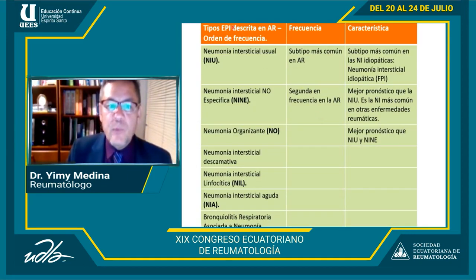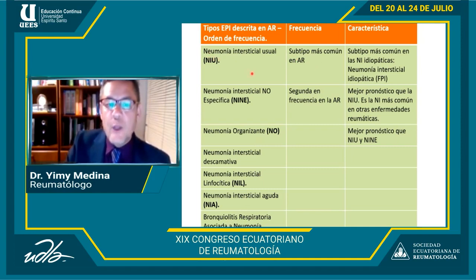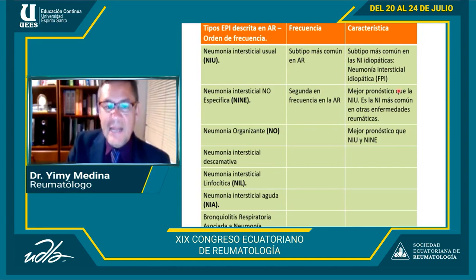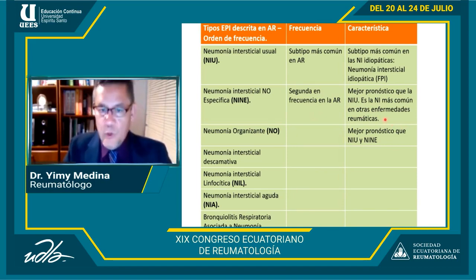Los tipos de neumonía intersticial en la AR por frecuencia son: la neumonía intersticial usual (NIU), la no específica (NINE), la organizante, la descamativa, la linfocítica, la aguda y la bronquiolitis respiratoria asociada. El tipo más común en AR es la NIU, igual que en las neumonías idiopáticas, y la NINE es la segunda, con mejor pronóstico. En cambio, en otras enfermedades reumáticas la NINE es la más común.